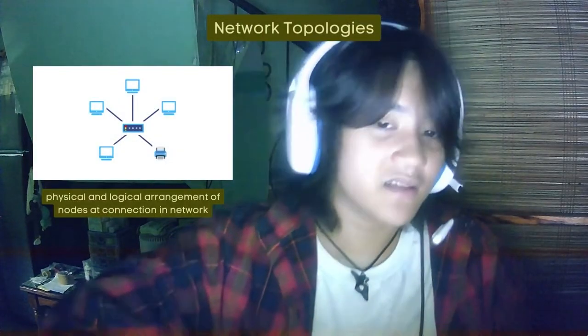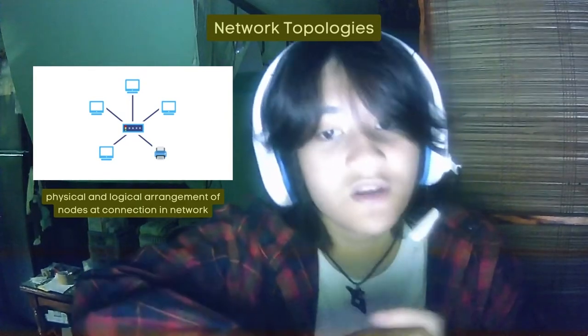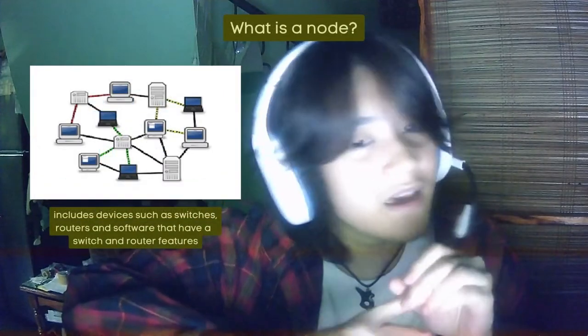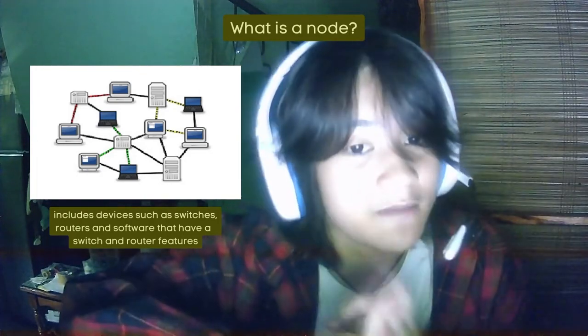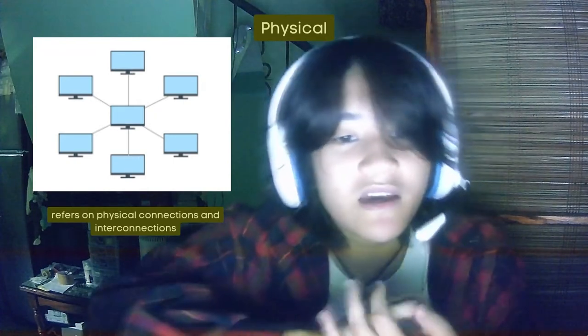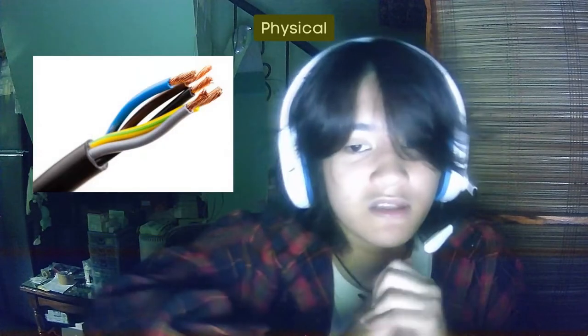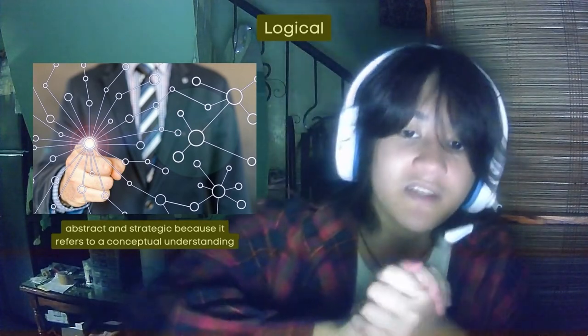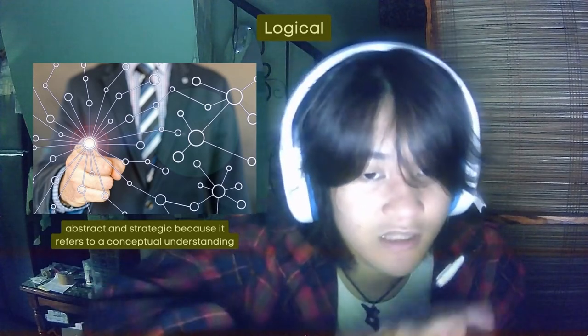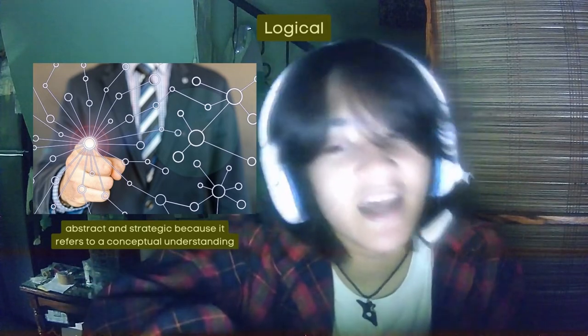Next is from Mirai. Her question is: what are network topologies? Well, a network topology is the physical and logical arrangement of nodes and connections in a network. Nodes typically include devices such as switches, routers, and software with switch and router features. There are two approaches to network topology: physical and logical. Physical refers to the physical connections and interconnections between wires, cables, and so forth. Logical network topology is more abstract and strategic — it refers to the conceptual understanding of how and why things are arranged that way and how data moves through it. As far as I remember, there are seven types of network topology.